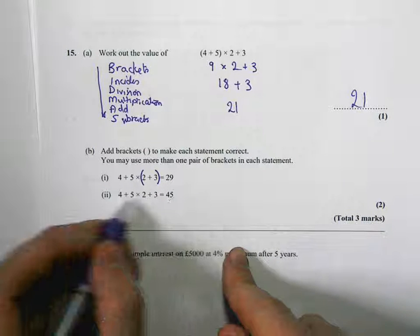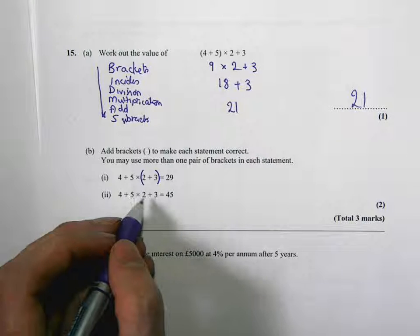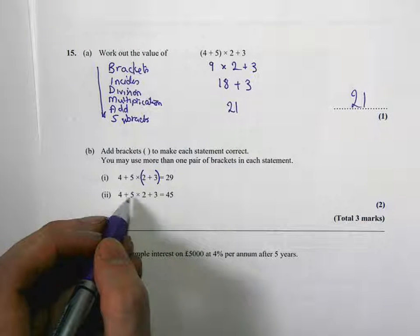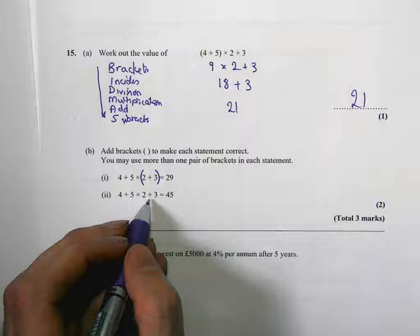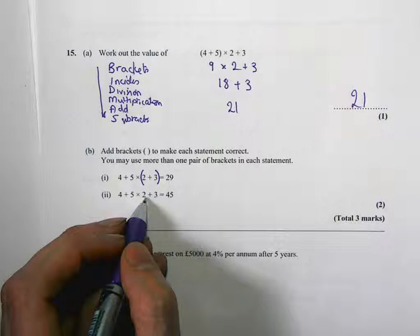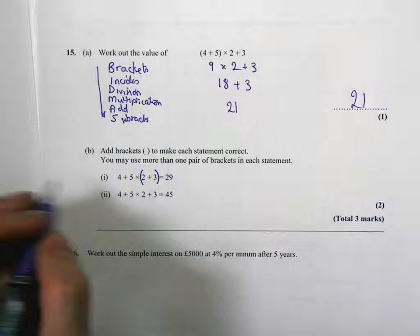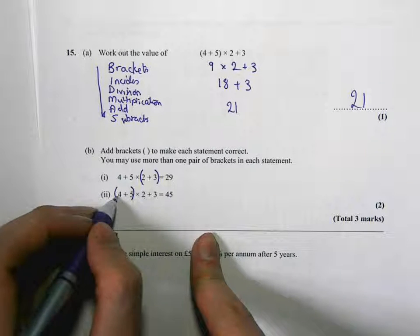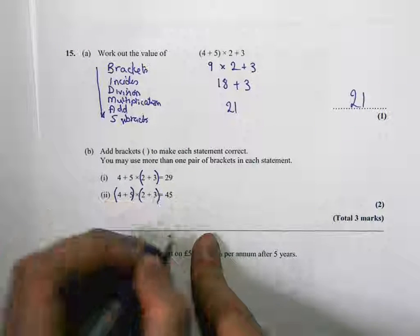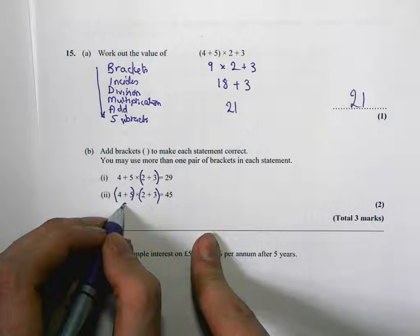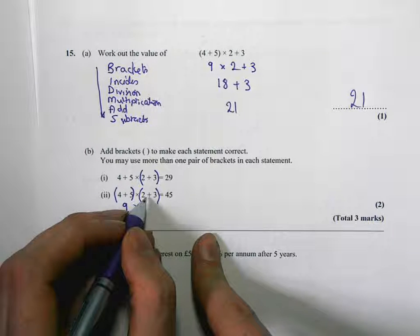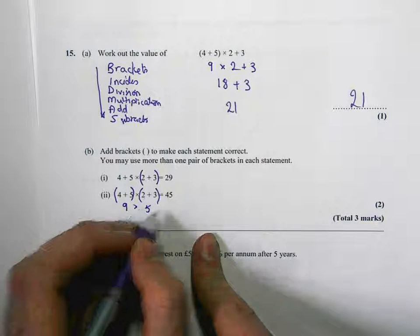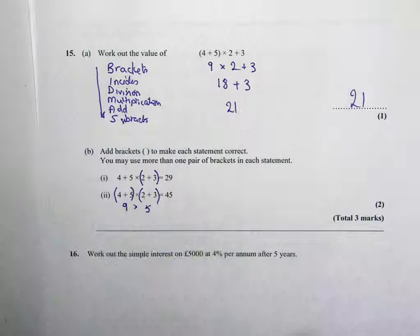The next one, we need 45. So let's see. 4 plus the 5, that's 9. Maybe times 2 plus the 3. That would do. Put the brackets in there. So we do that bit first. Then that bit. So that would be 4 plus the 5 is the 9. Times 2 plus the 3. That's the 5. 9 times 5 is 45. So that should be good for us.